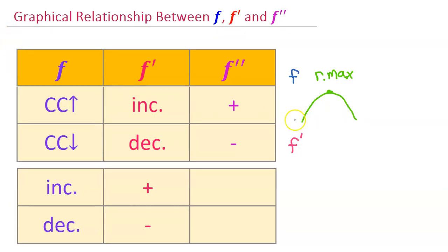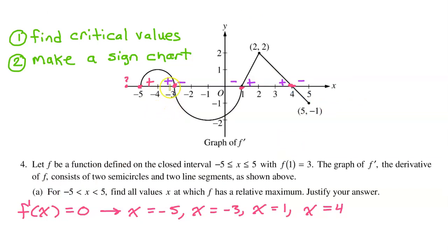Think about the graphical relationship between f and f prime. At a relative maximum, the original function f goes from increasing to decreasing. If the function is increasing, then f prime will be positive. If the function is decreasing, f prime will be negative. So at a relative maximum, f prime should go from positive to negative. Looking back at our sign chart, we see that f prime goes from positive to negative at x equals negative 3 and at x equals 4. The question mark goes from something to positive, so it definitely does not go from positive to negative — we can disregard negative 5.